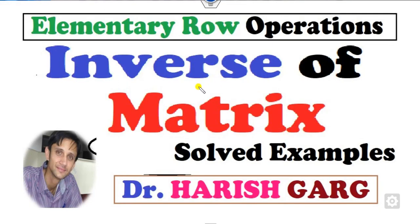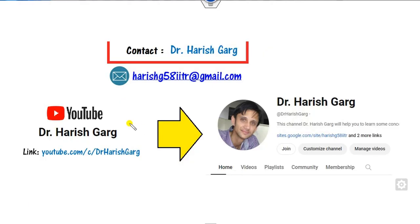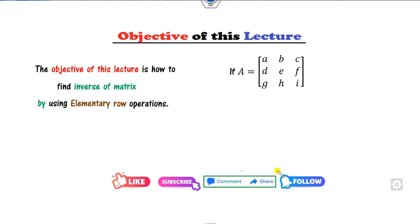Hello everyone, welcome to the next lecture on linear algebra. Today I will explain how you can find the inverse of a matrix by using elementary row operations. I am Dr. Rishkar — you can follow my YouTube channel where you can find various lectures related to linear algebra. The objective is: if you have any square matrix, whether 3×3, 4×4, 5×5, or any higher-order matrix, you can find the inverse using elementary row operations.